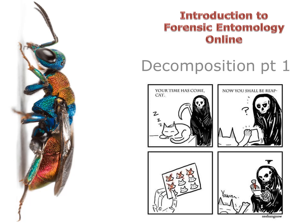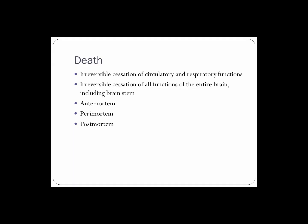Let's do this. We're going to talk about the process of death today and what happens to an animal after death. First, we have the definition of death. The definition of general death is the irreversible cessation of circulatory and respiratory functions, and/or the irreversible cessation of all functions of the entire brain, including the brain stem.